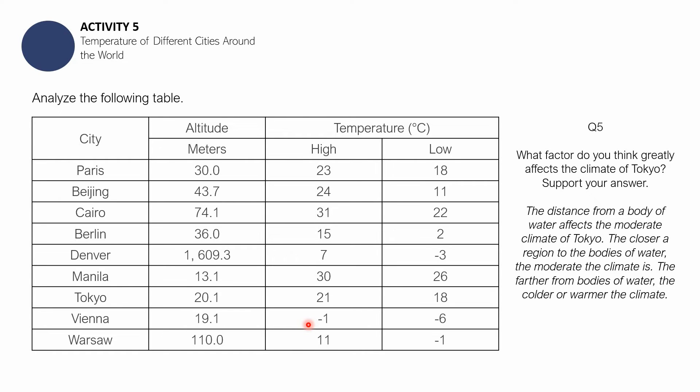Question number 5: Which factor do you think greatly affects the climate of Tokyo? The distance from a body of water affects the moderate climate of Tokyo. The closer a region to the bodies of water, the more moderate the climate. The farther from bodies of water, the colder or warmer the climate. Tokyo has 21 and 18. Since Tokyo is in a place in Japan that is near the body of water, that affects its temperature regulation.